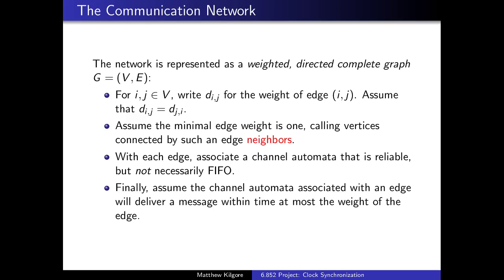Now, the communication network is a bit different than usual, because it's a weighted directed graph. For any two vertices, we write D_ij for the weight of the edge, and we assume that D_ij equals D_ji. Assuming that the minimum edge weight is 1, we call vertices neighbors if such an edge exists. Each edge associates a channel automata that is reliable but not necessarily FIFO, and we assume the channel automata will deliver a message with uncertainty at most the weight of the edge.